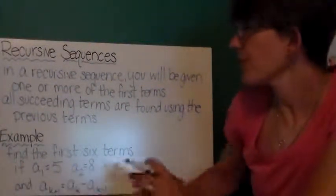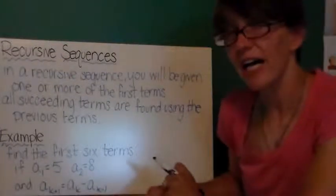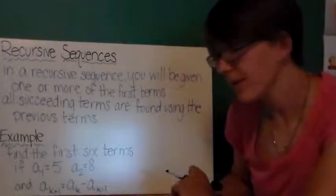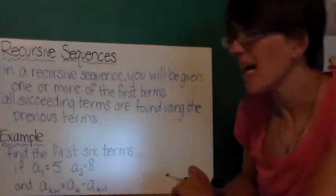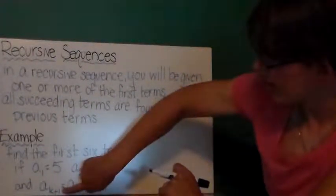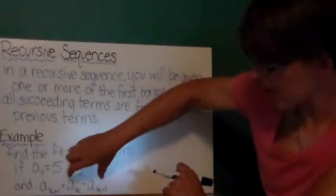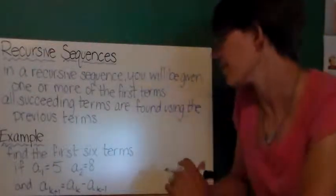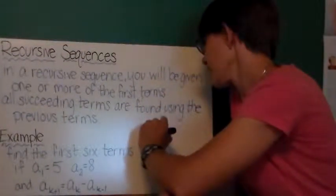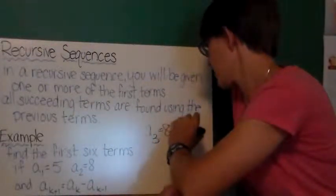So here's an example. I want to find the first six terms of a sequence that begins with the first term is 5 and the second term is 8. And it has this rule: a sub k plus 1 equals a sub k minus a sub k minus 1. Now what this is telling me is to get the next term, that's what this a sub k plus 1 means, to get the next term, take these two terms, that's the last term and the second to last term, and subtract them. So the first six terms, well, 1 and 2 are 5 and 8. A sub 3 is going to be 8 minus 5, or 3.